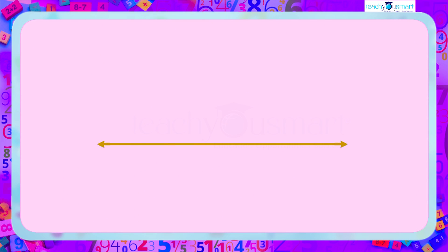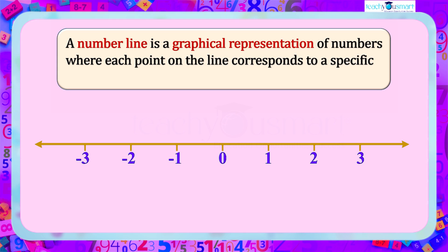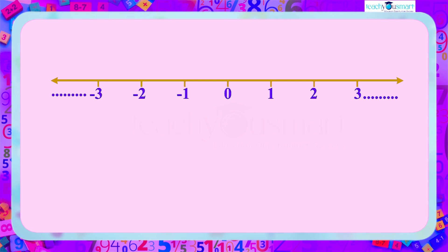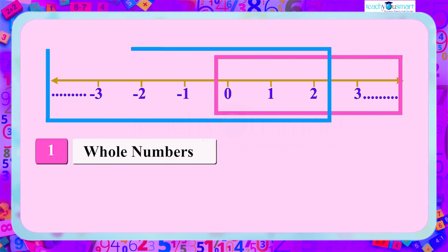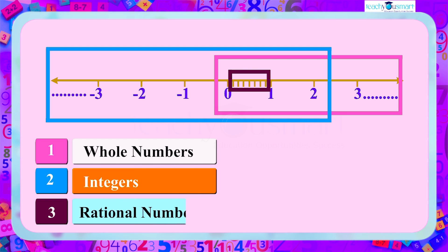As we have seen in our previous video, a number line is a graphical representation of numbers where each point on the line corresponds to a specific value. It helps us visualize and compare different types of numbers, including whole numbers, integers, and rational numbers.